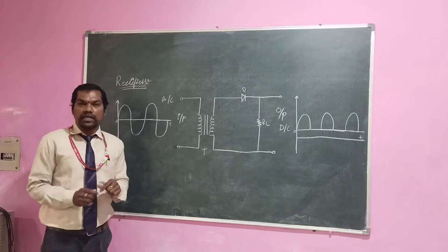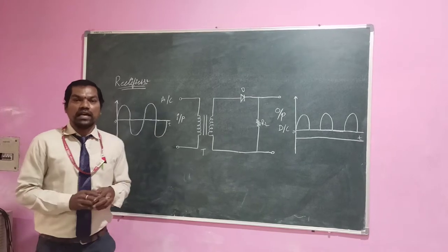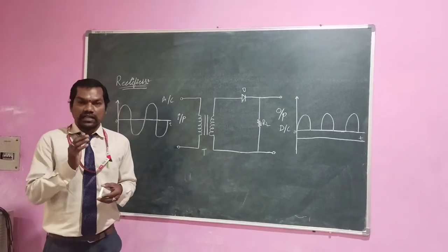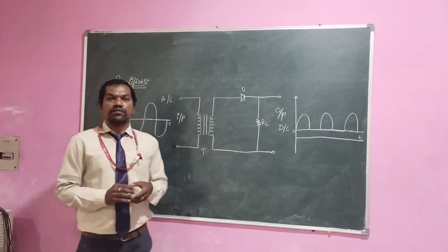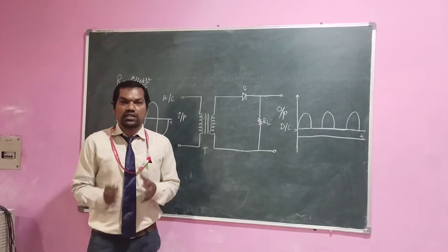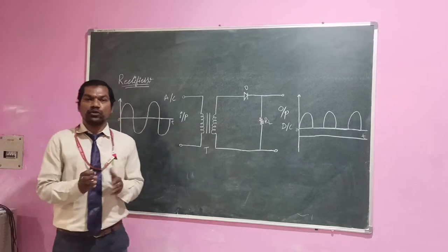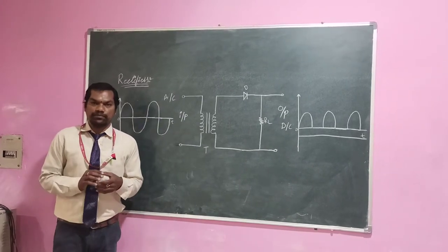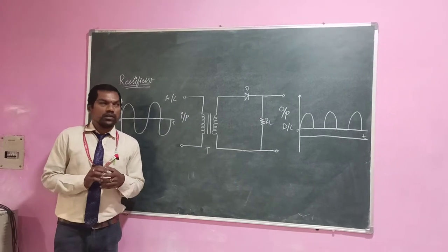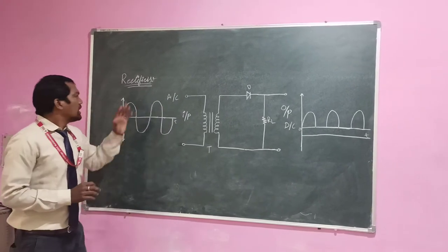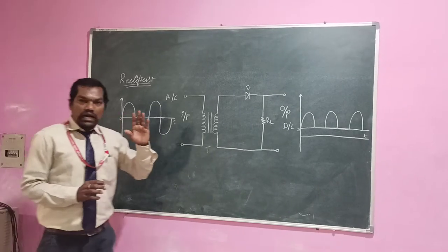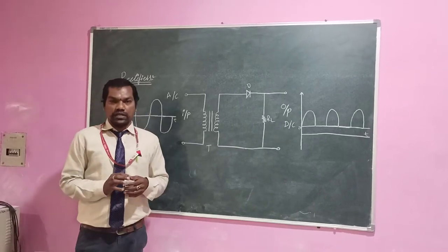So, what is the definition of a rectifier? A rectifier is an electronic device which converts AC into pulsating DC. Here we have the types of rectifiers.